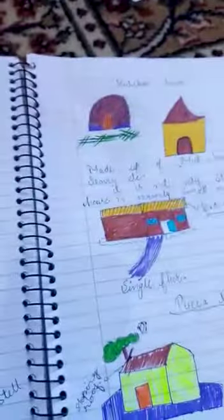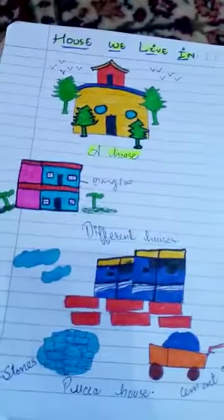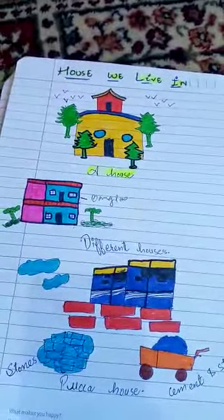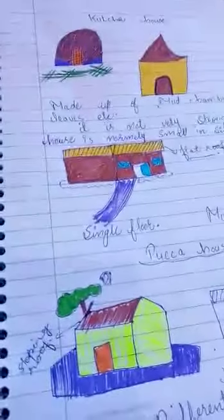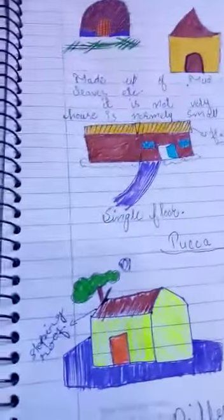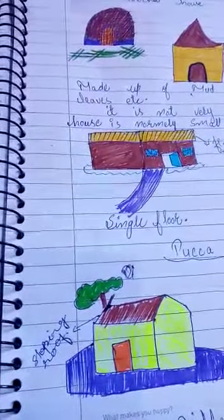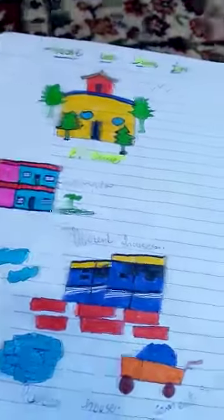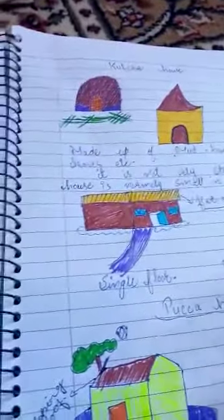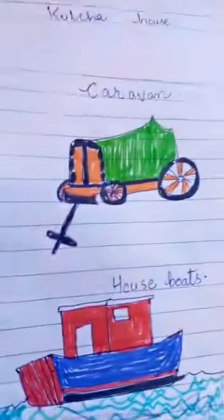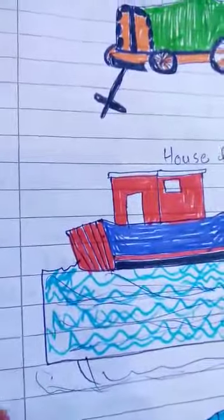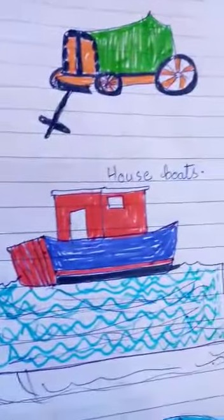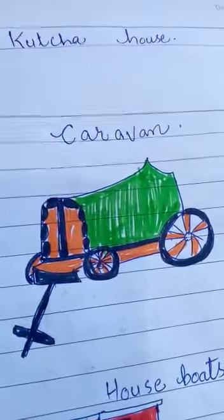Houses like huts, bungalows, apartments, and stilt houses cannot move from one place to another — these are permanent houses. Permanent houses cannot move from place to place. However, some people keep moving from one place to another, so they make temporary houses that can be moved. These can be caravans, houseboats, or boats. A houseboat is a house built on water. In India, houseboats are generally found in Kashmir and Kerala, and tourists love to stay in these unique houses.